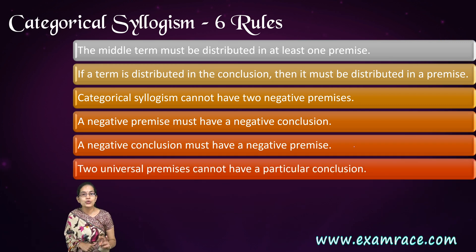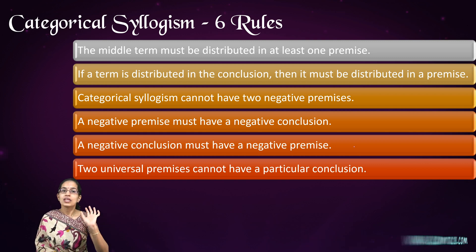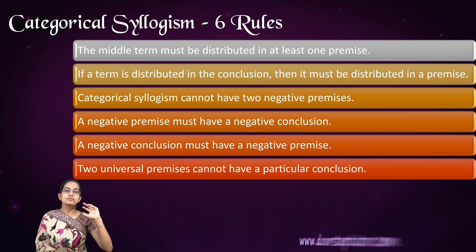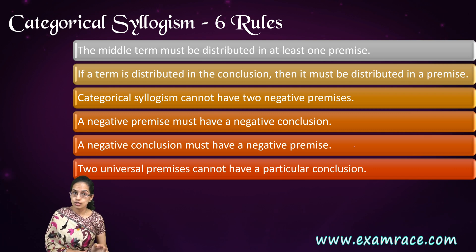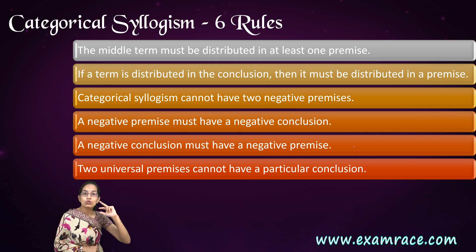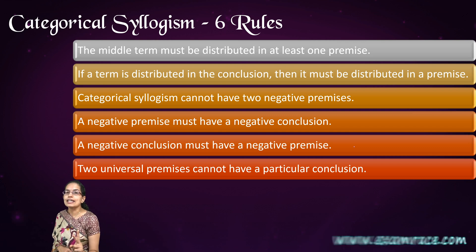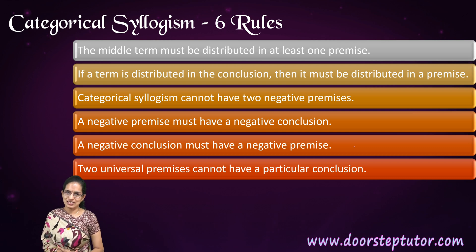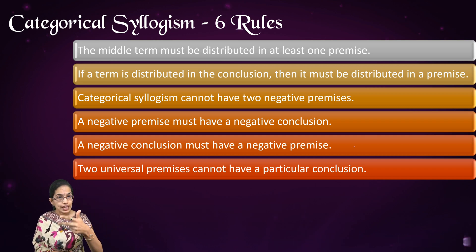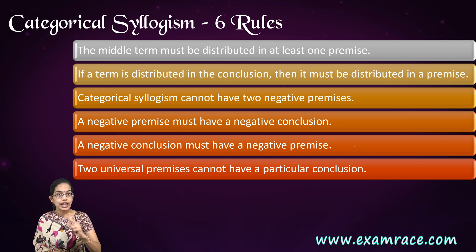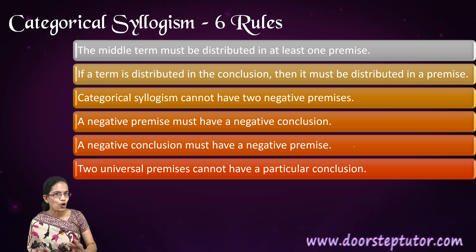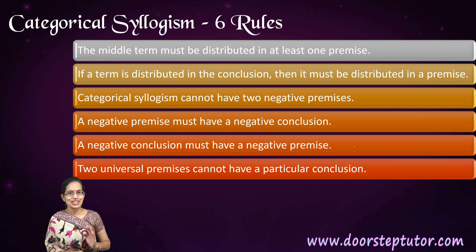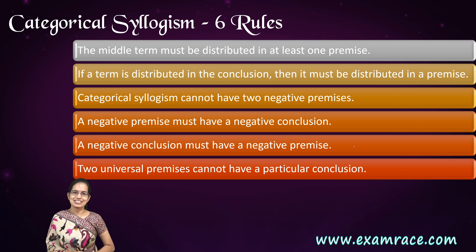The sixth rule is: two universal premises cannot have a particular conclusion. If both premises begin with universals — 'all' or 'no' — then the conclusion cannot be a particular one. For example, if I say 'all cats are dogs' and 'all cows are dogs,' I cannot conclude 'some cows are cats.' So if both statements are AA, EE, or AE, the conclusion cannot be I or O. These are the six important rules of categorical syllogism. We will be covering many more interesting lectures on logic — don't miss those.